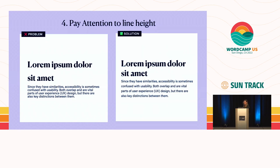Number four: pay attention to line height. This can often be overlooked and people can end up using default line height. Heading lines can be difficult if they're very far apart, and constrained paragraph text is very hard to read. The solution is to reduce the line height on your headings and make your minimum body line height at least 130%. Different fonts act differently by default, but this is a general rule of thumb. It'll also make your designs look a lot more professional.